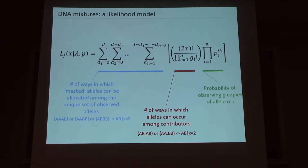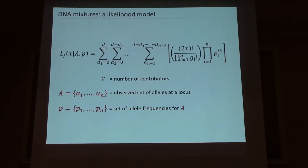To unpack this just briefly — all the summations and factorials are just combinatorics trying to tell us how many different ways you can allocate alleles among individuals. But the core is simply: which alleles did we see in the mixture, and what are their allele frequencies? The two ingredients we need to use this estimator are the genotype of the mixture — the unique set of alleles observed — and the associated allele frequencies for those. This is resolving how many contributors made up a mixture with a single species.